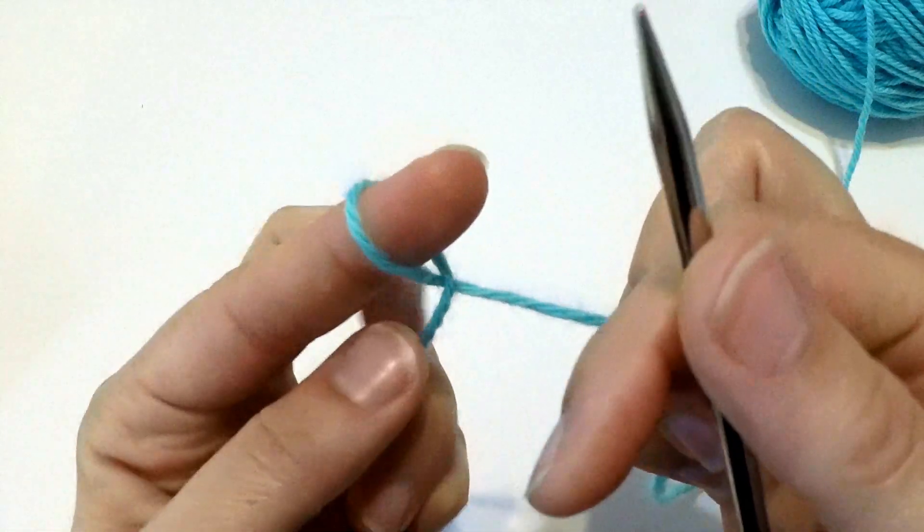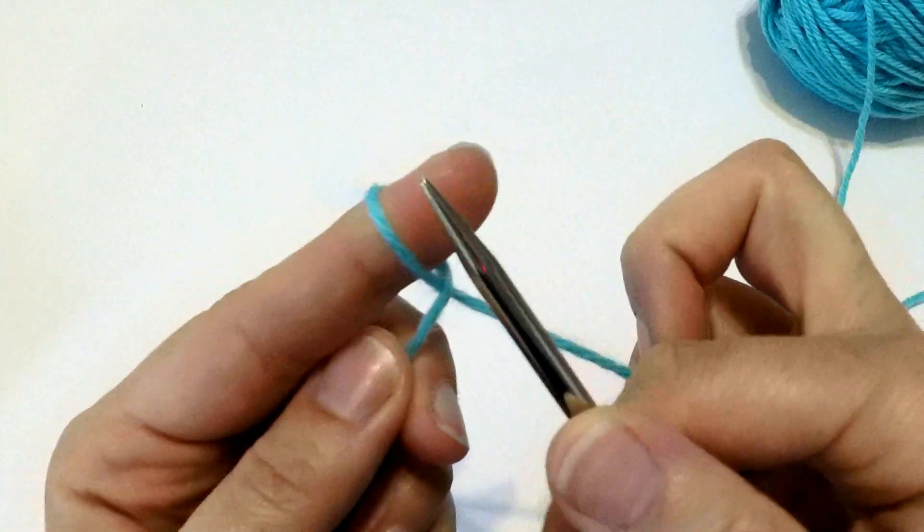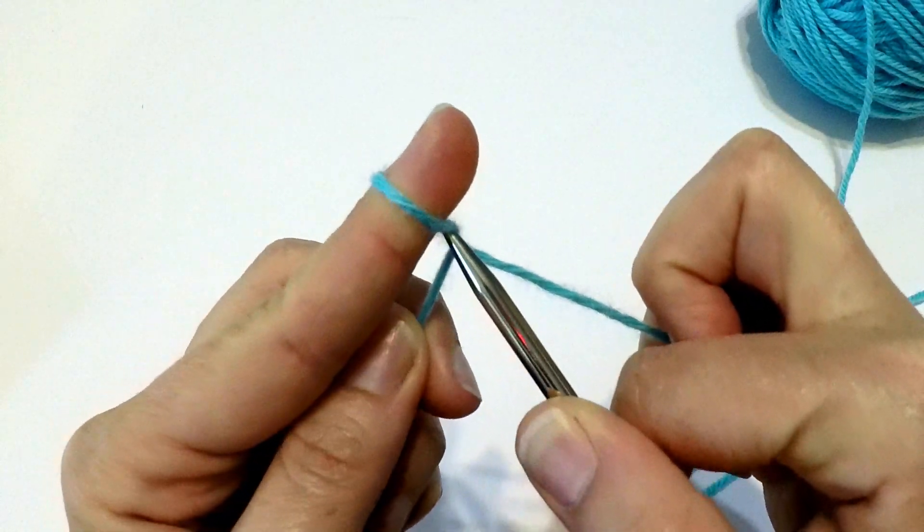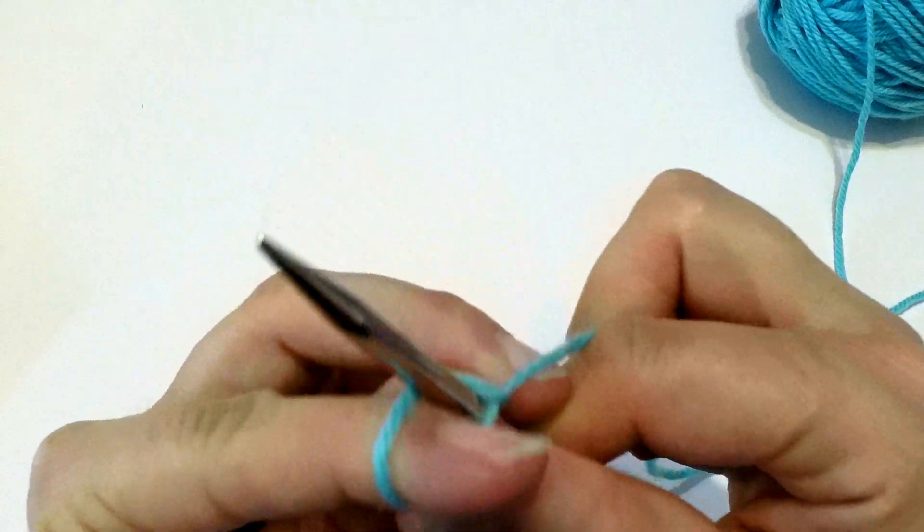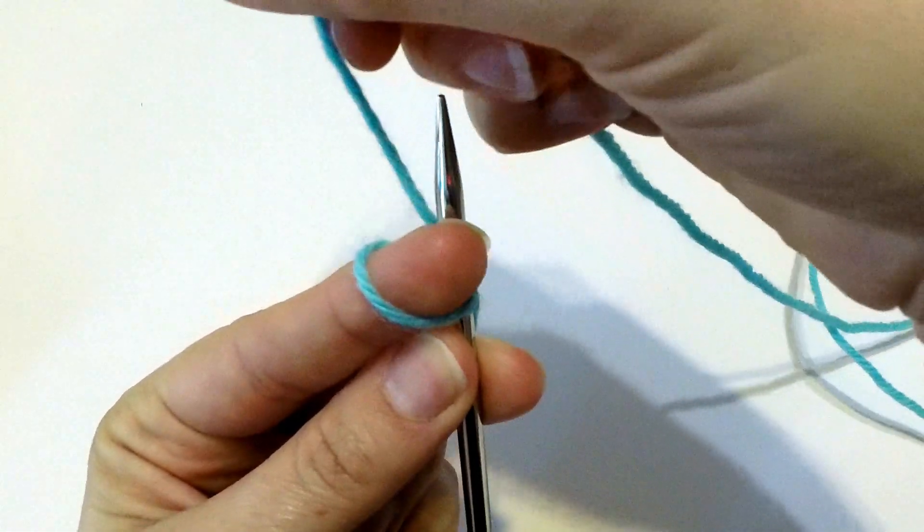And now I have a loop on my finger that's perfectly crossed for me to knit it. So I'm going to insert the knitting needle into that loop from the left towards the back. And knit.